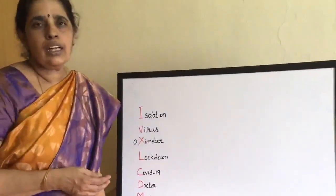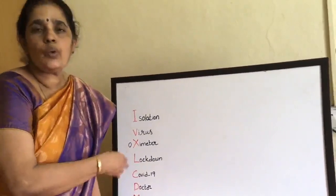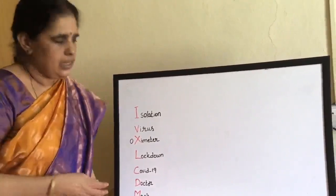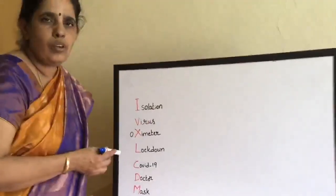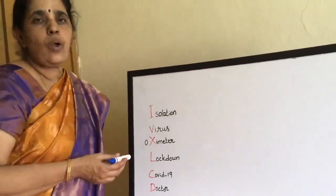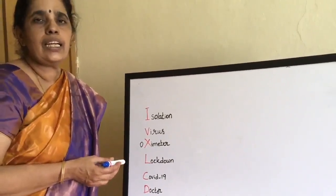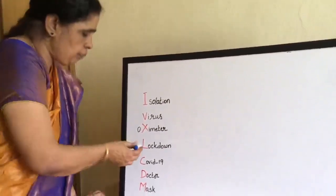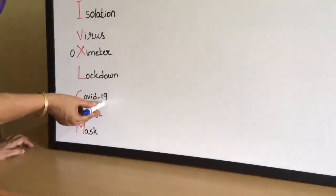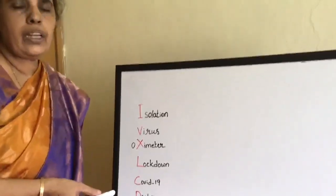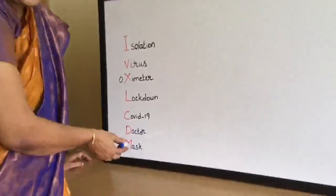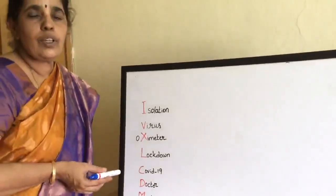Children, here I have written some words. In the present situation, we are using these words more. If you don't know the meaning of these words, check your dictionary. Let us start: isolation, virus — virus means coronavirus — oximeter, to check the oxygen levels in our body. If it is lesser than 90, we should consult a doctor immediately. Lockdown. COVID-19 — severe coronavirus disease 2019. Doctors are helping us a lot in the present unusual situation. Mask — we cannot go outside without a mask.